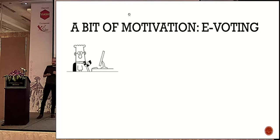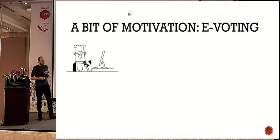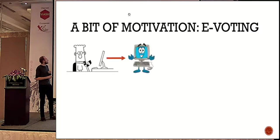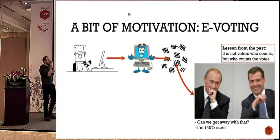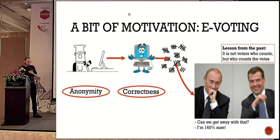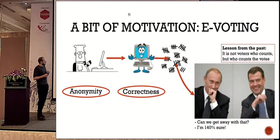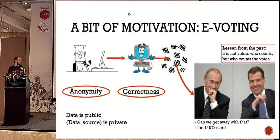Let me talk about the motivation for shuffle arguments. One motivation is e-voting. In e-voting, a voter like Bob uses his computer to send his vote to some server, and the server counts the votes. But as history tells us, it's not who votes that counts, but who counts the votes. MixNet gives us two properties: anonymity and correctness. Correctness comes from the fact that data is public, and anonymity from the fact that data and its source are private.